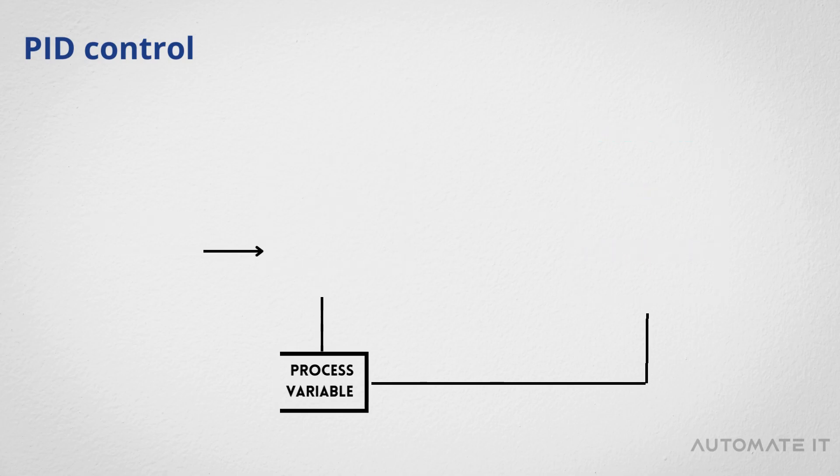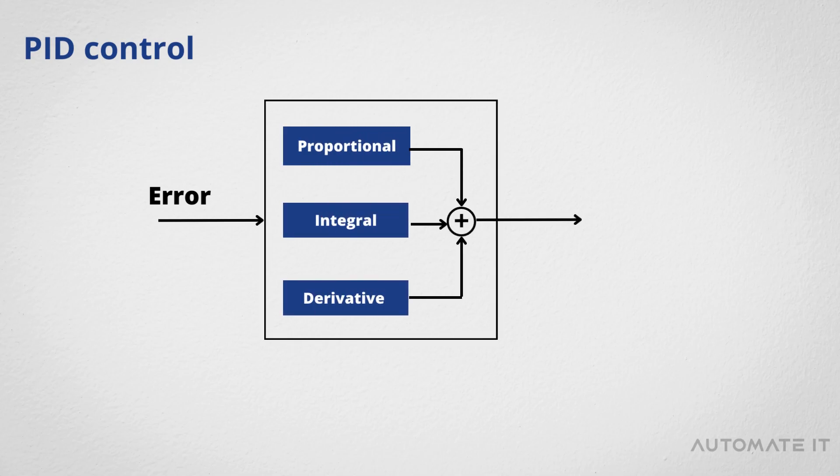PID control uses three components to maintain a desired setpoint: proportional control, integral control, and derivative control.